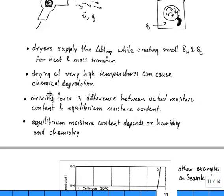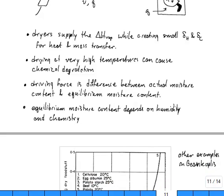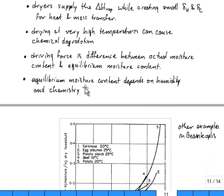You will learn here in the next slide that the driving force for drying is the difference between the actual moisture content and the equilibrium moisture content. And finally, we need to know that the equilibrium moisture content depends on the humidity of the air and the surface chemistry that will determine the extent to which water sticks to the material.